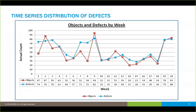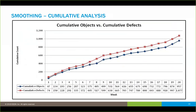We looked at how the defects were distributed over that 20-week period using a chart showing objects created in red and defects introduced in blue. Even with a lot of variability, they tracked relatively close to each other. Looking at the cumulative curves smoothed the noise out considerably. The telltale sign was that the cumulative defects on top were actually greater than the cumulative objects in blue — meaning on aggregate they were producing more defects than they were producing objects. A very serious problem that required drastic measures for remediation.